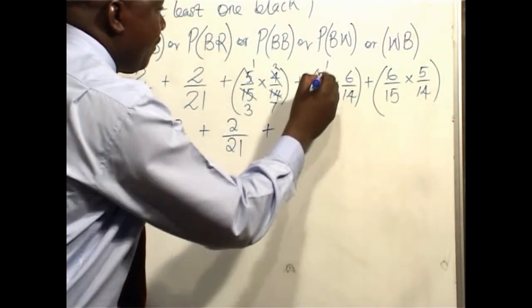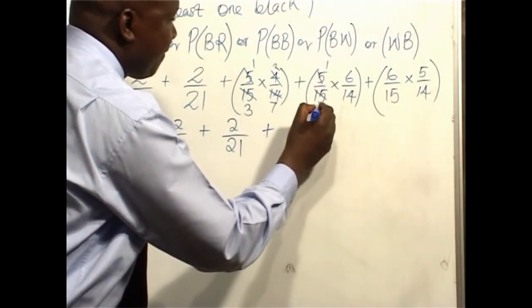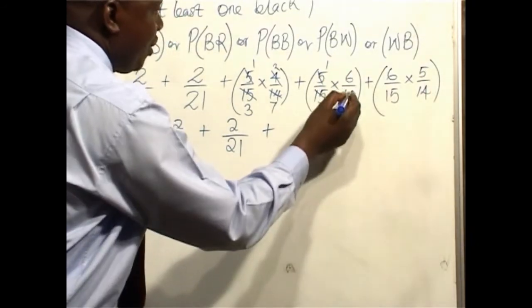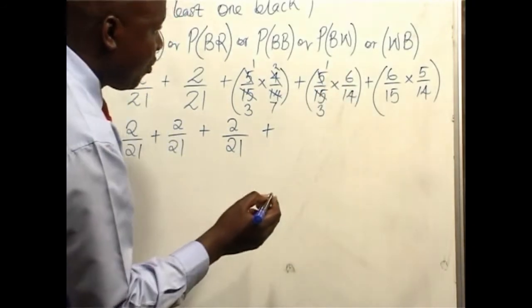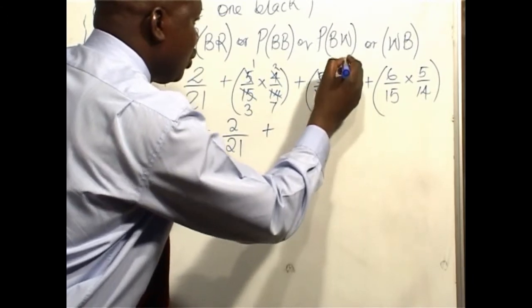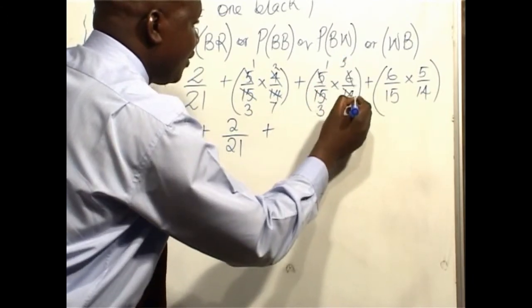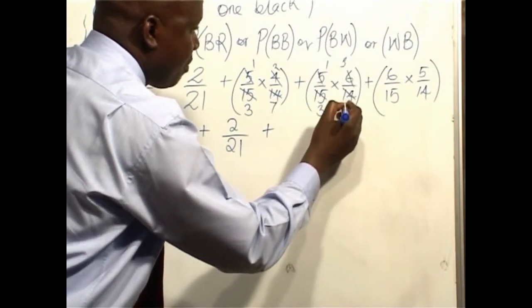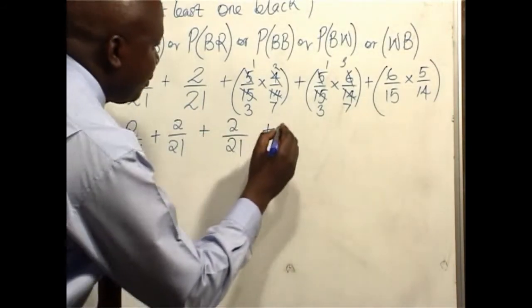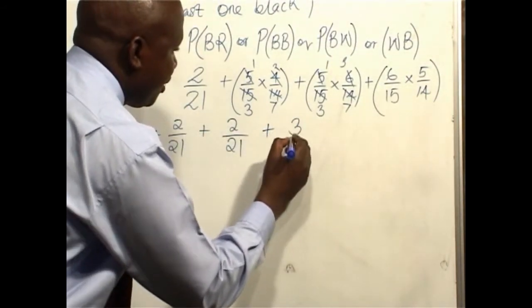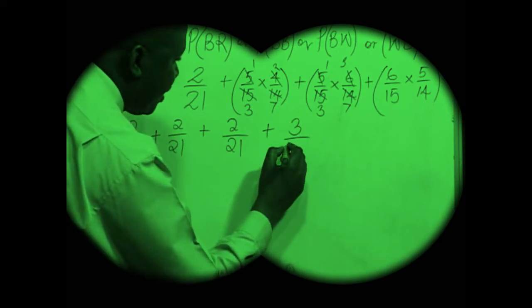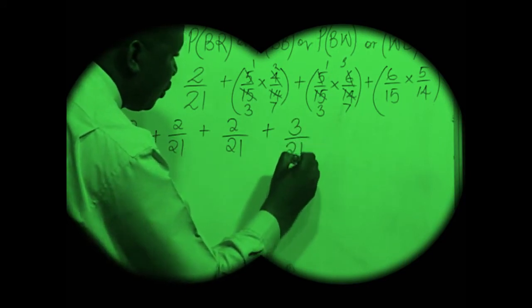5 divided by 5 is 1. 15 divided by 5 is 3. Between these two, the common factor is 2. 6 divided by 2 is 3. 14 divided by 2 is 7. 1 times 3 is 3. 3 times 7 is 21.